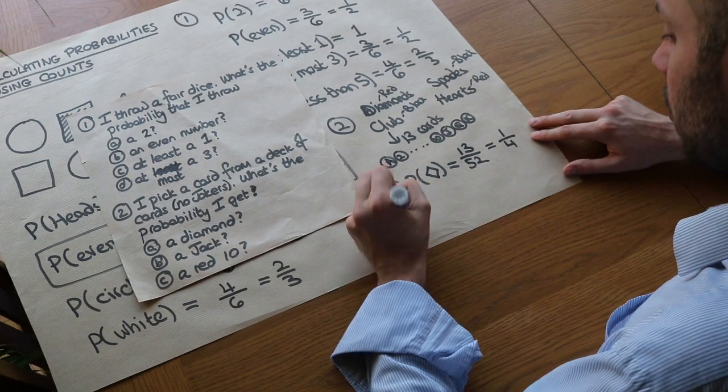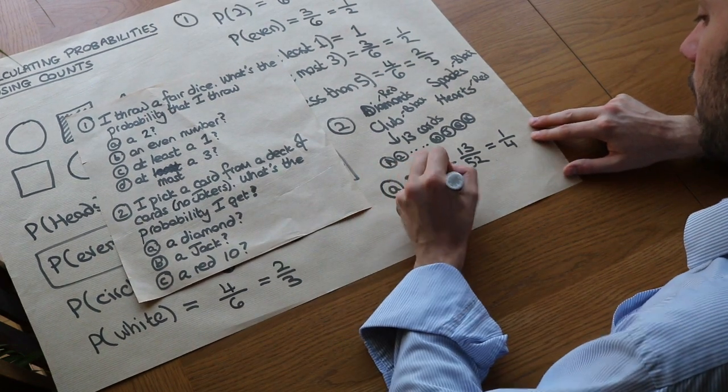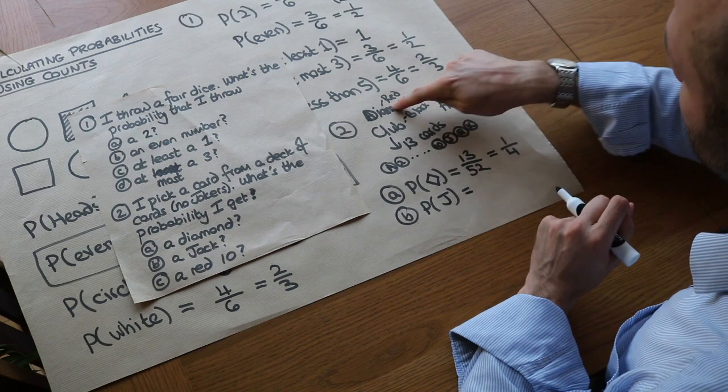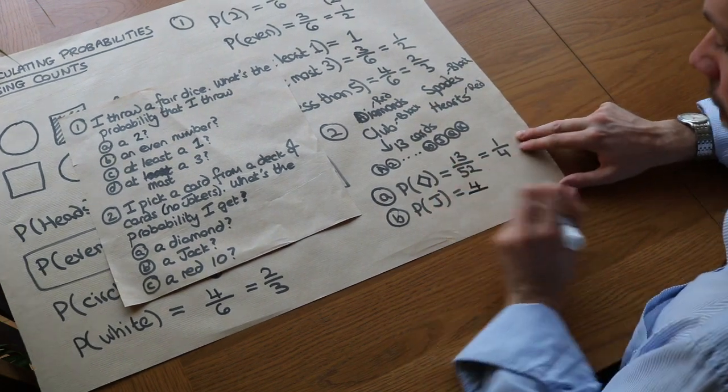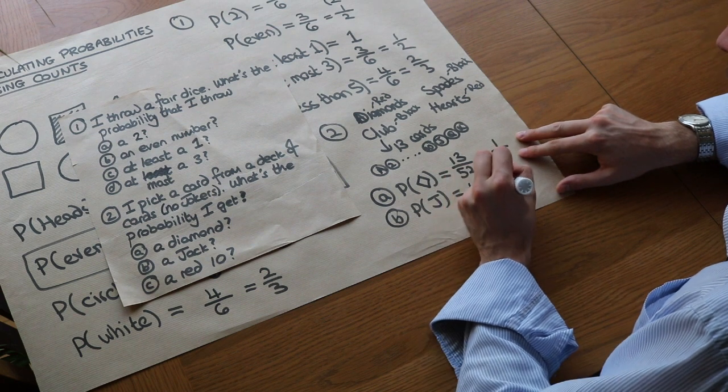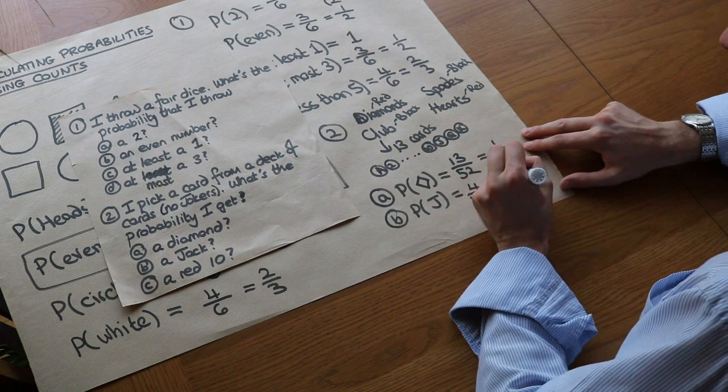What about the probability of a jack? Well, there's a jack within each of the four suits. So there's four jacks in each pack, out of the 52 cards we could possibly pick from. And that would simplify to one in 13.